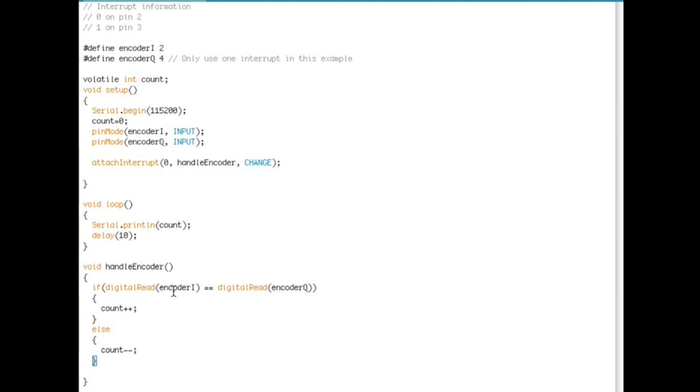What we do here is we read the encoder I pin and we read the encoder Q pin. And if they're the same as we discussed a second ago, that means we're moving in one direction and so we increment the count. If they were different, we decrement the count. And that's it.